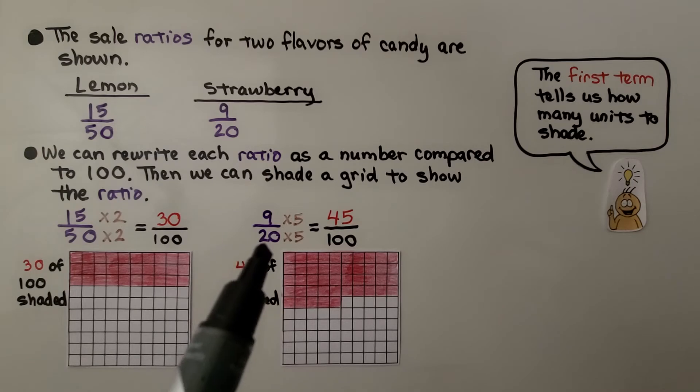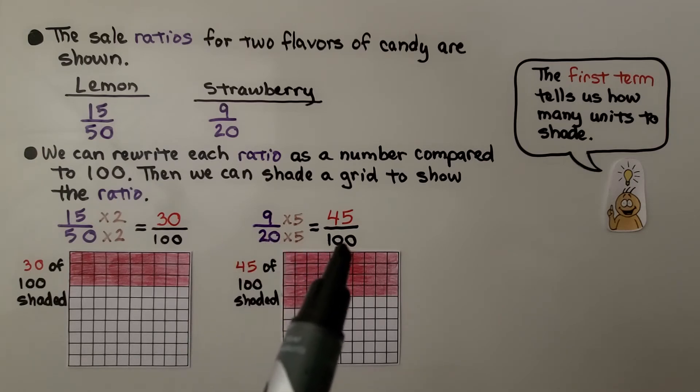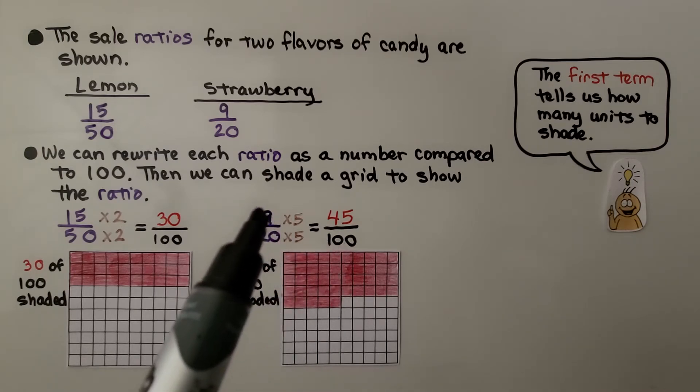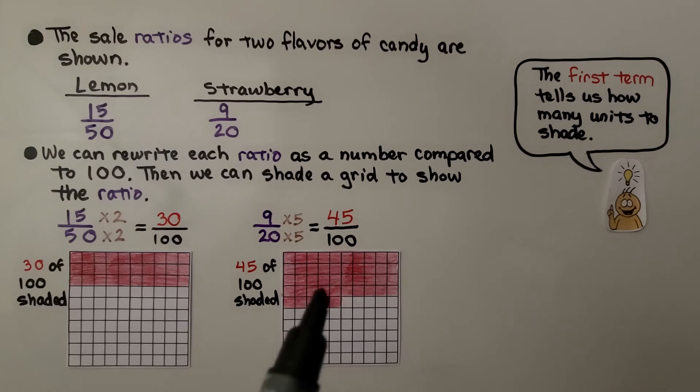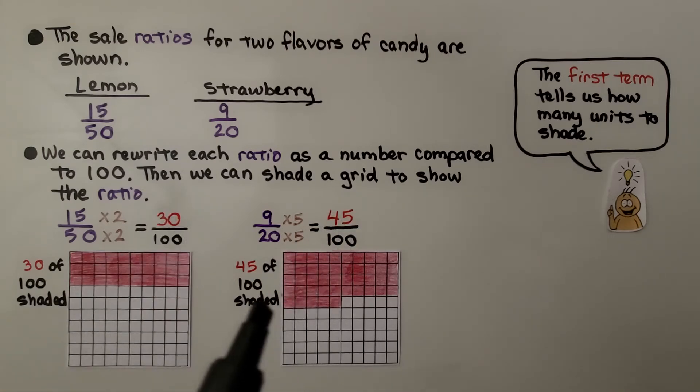For 9 to 20, we need to multiply the 20 times 5 to be 100. So we need to multiply 9 times 5, which is 45. And we shade 45 of the 100 units. The first term tells us how many units to shade.